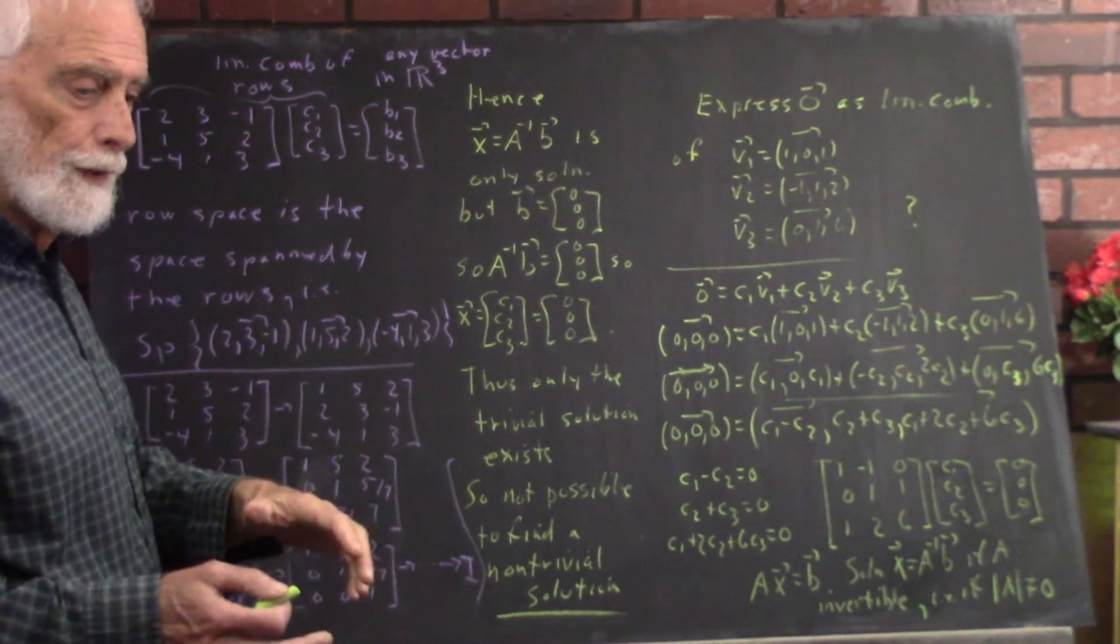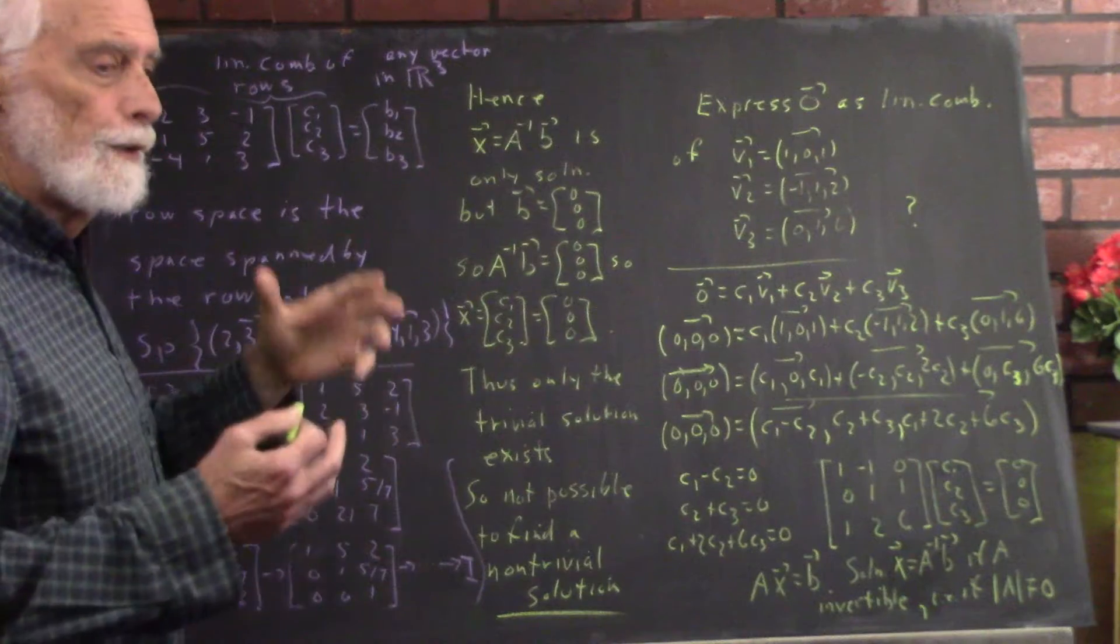You can't add three of them to get a zero vector. They're linearly independent. You have dimension 3.